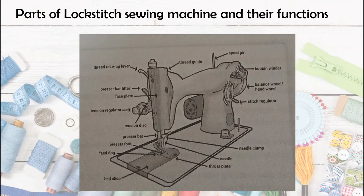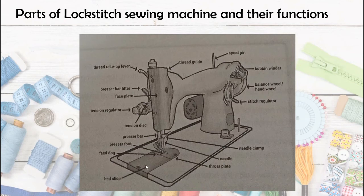The throat plate is the plate directly under the presser foot through which the needle passes. The fabric rests on it and is moved forward. Next is the slide plate — it is a flat plate that provides access to the bobbin case and other parts of the lower thread mechanism without lifting the sewing machine. When you open the slide plate or bed slide, you find the bobbin and bobbin case inside. The bobbin contains thread — two threads are used in sewing: one from the spool pin and one from the bobbin case.